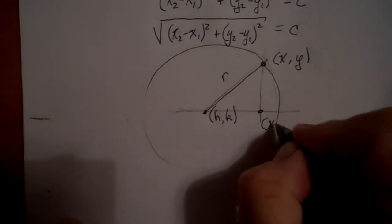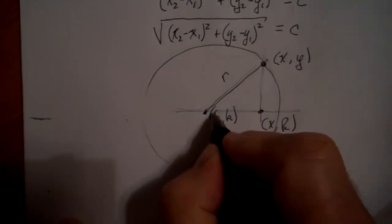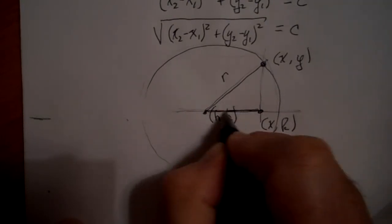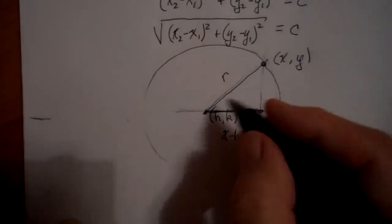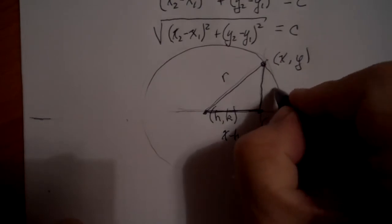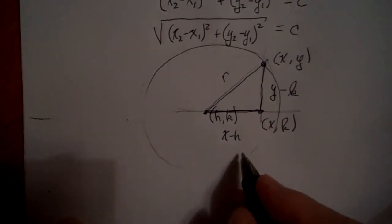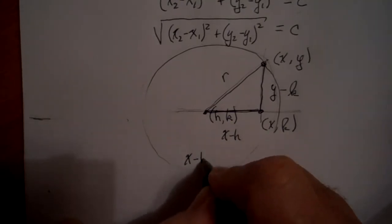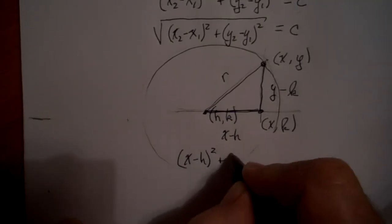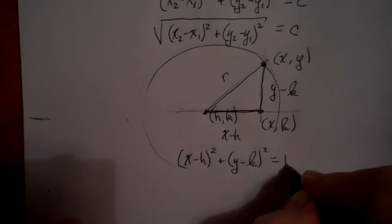Using the same reasoning as before, the left-right position of the intersection point is given by x and the up-down position by k. So the horizontal leg has length x minus h, and the vertical leg has length y minus k. There's a relationship between these three sides: (x − h)² plus (y − k)² equals r squared. And that's the equation of a circle.